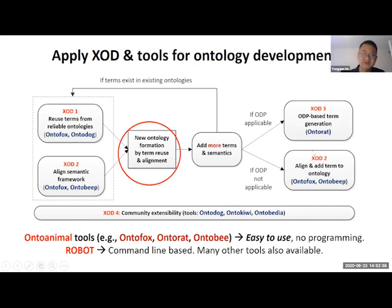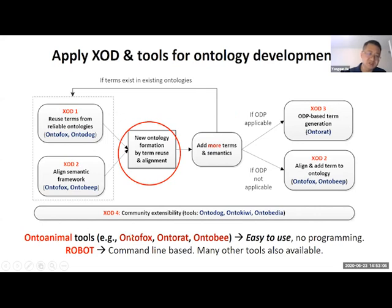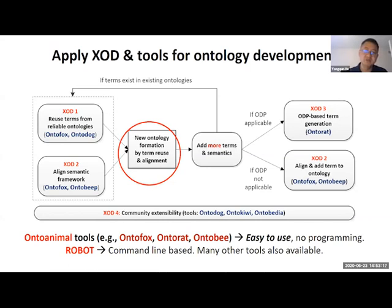There is a pipeline: reuse terms and align them, then add new terms when you cannot find them from other resources. We also develop tools in our lab—things like ontology annotation tools and ontology forest. Something that looks easy can often be difficult; if you just copy and paste, it takes a lot of time. But if you use our tools, it can be easy.